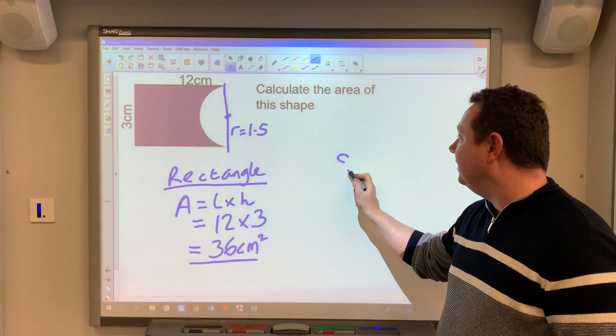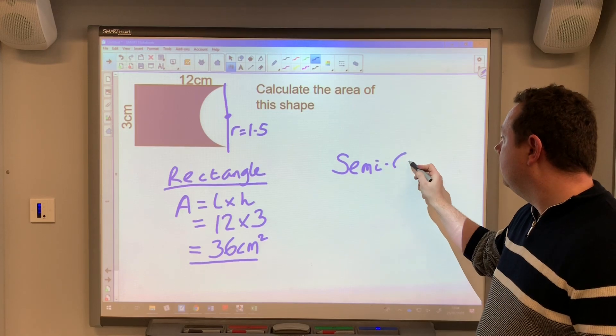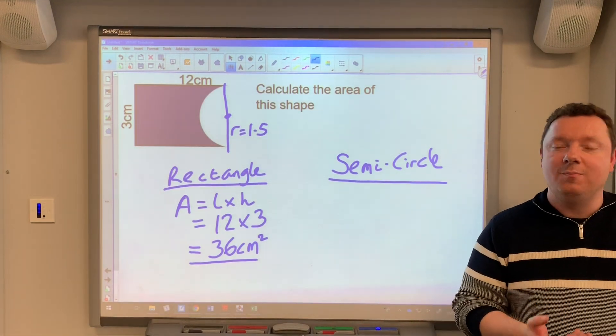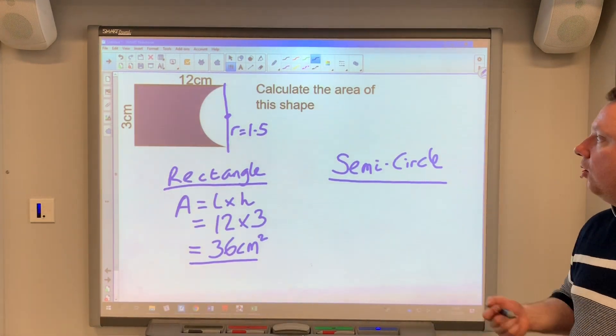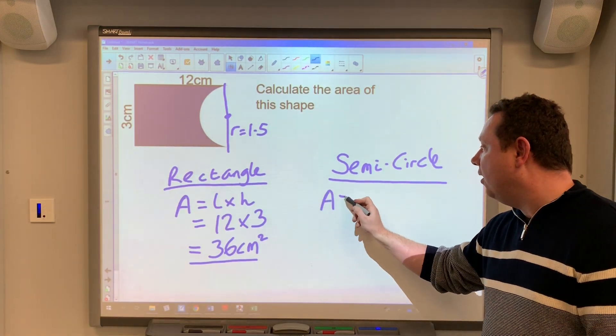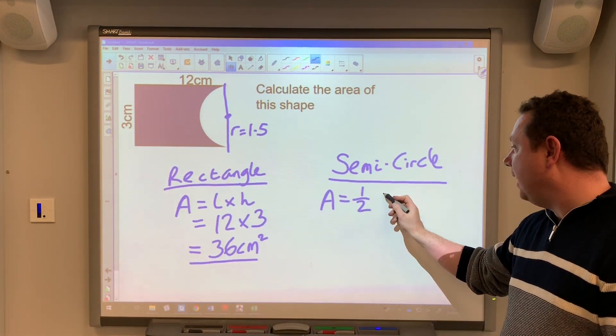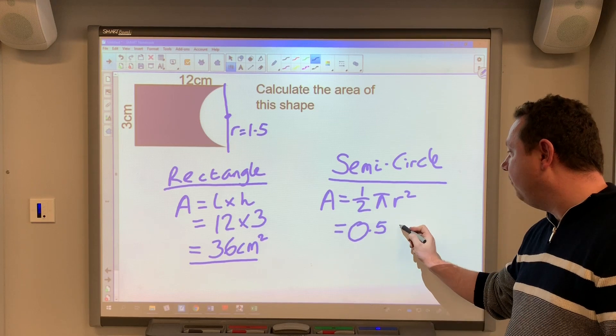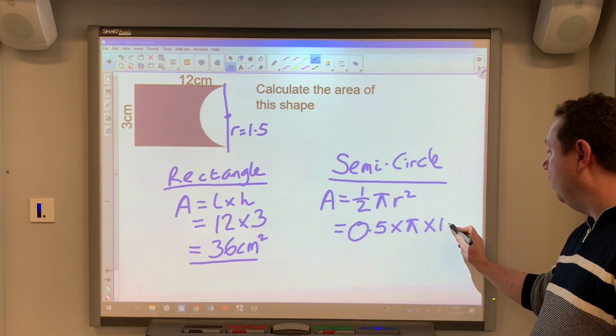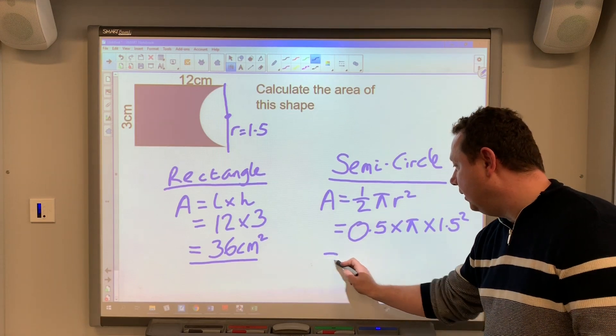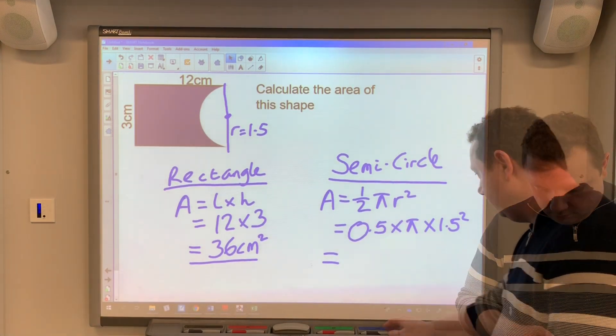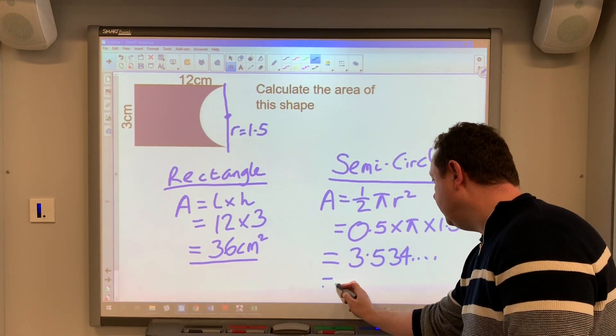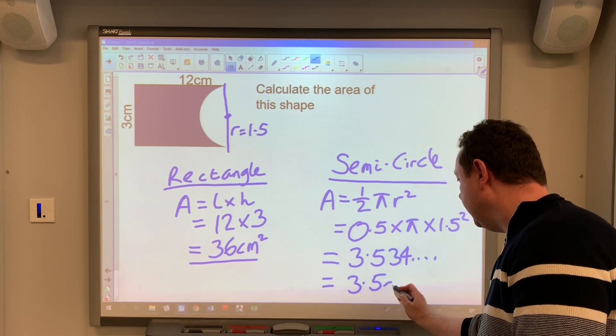So I've now got the area of the rectangle, and I've also got a semicircle, or half a circle. Now I could just work out the area of the whole circle, then remember to half it, but I'm better off just writing down it's the semicircle to start with. So I write down the area of a circle, but put a half in front. So it's a half of pi r squared. So that's, in a calculator, 0.5 for a half times pi times 1.5 squared. Using a calculator to work that out, you get 3.534 which to one decimal place is 3.5 centimeters squared.